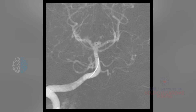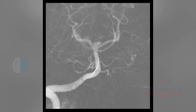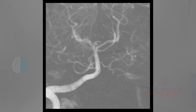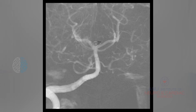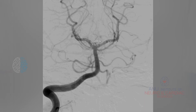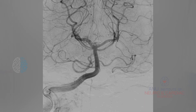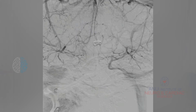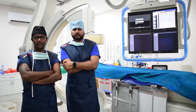A guiding catheter, micro catheter, and micro guidewire were used, and the aneurysm was coiled using 3D complex filling coils of sizes 5×10, 3×6, and 2.5×4 mm. The patient made a good functional recovery.